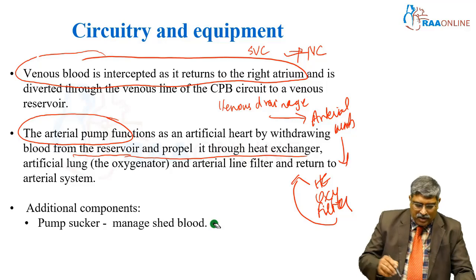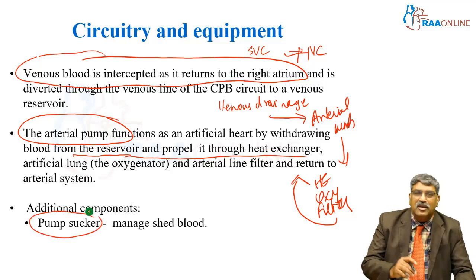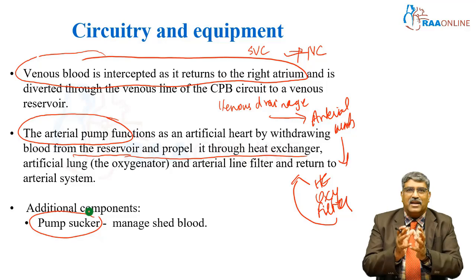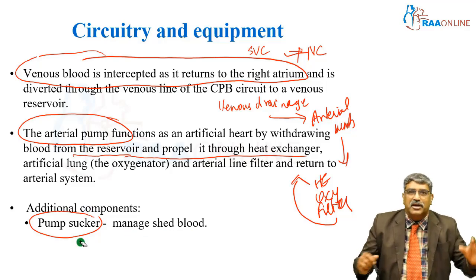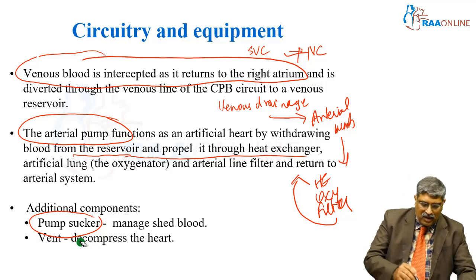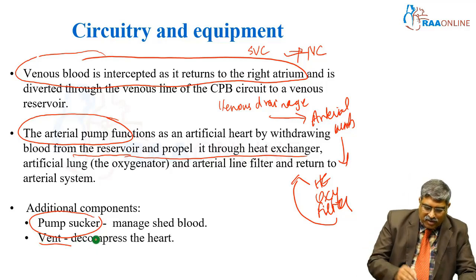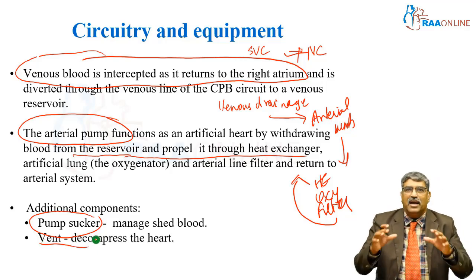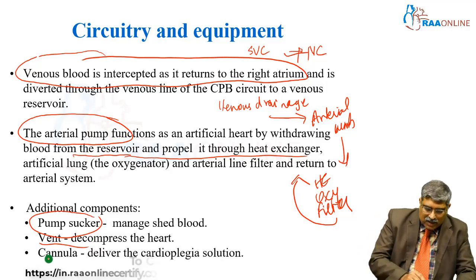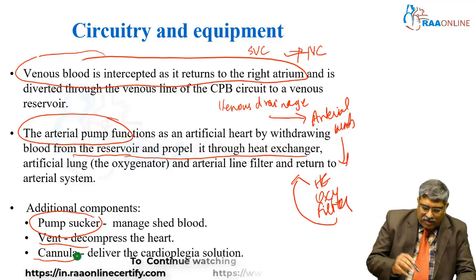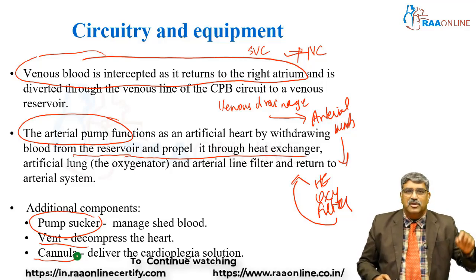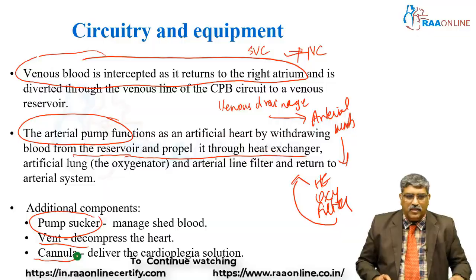Additional components include a pump sucker, which sucks the blood around the pericardial cavity and after treatment pumps it back into the circulation, and a vent to decompress the heart. The vent can be an LV vent or a pulmonary artery vent, along with a cardioplegia cannula to deliver the cardioplegia solution, which is placed on the aorta.